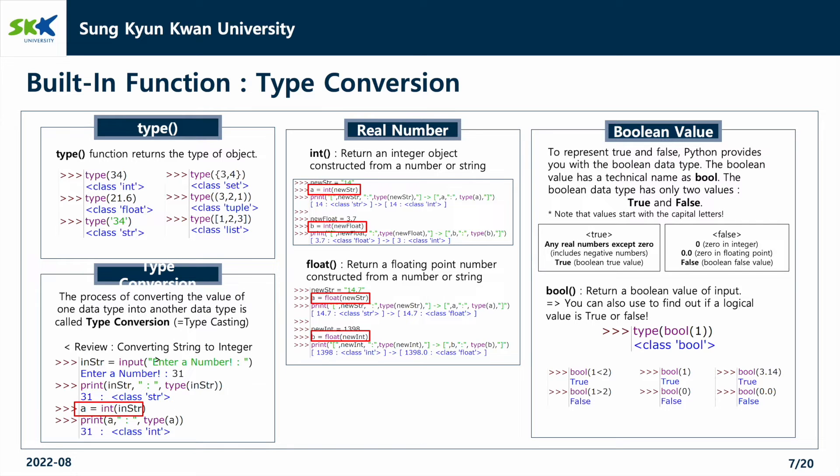The third is two functions related to real numbers. First, int returns an integer object constructed from a number or string. And float returns a floating point number constructed from a number or string.